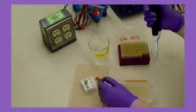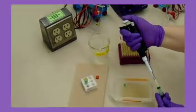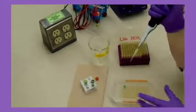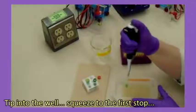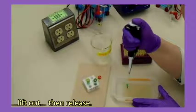One more time. Get a yellow tip. Press the plunger to the first stop and hold. Put the tip in the dye and release. Tip into the well. Squeeze to the first stop. Lift out, then release.